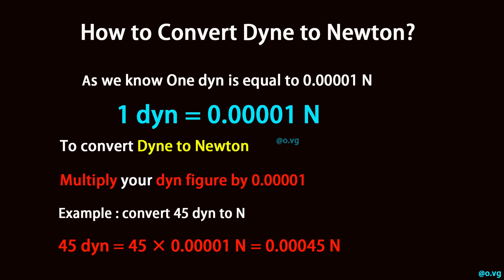Convert 45 dyne to newton. 45 dyne is equal to 45 times 0.00001 newton, which equals 0.000045 newton.